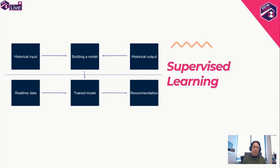One way that we do machine learning is called supervised learning. In supervised learning, we have historical input data and access to historical output data. Based on this, we can build a model and train it so that it can take new data it hasn't seen and provide us with a recommendation. We will look at supervised learning in our first example shortly.